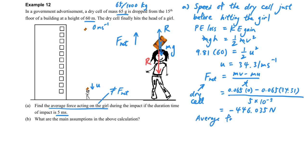But the girl is experiencing the normal reaction force. This is the difference. So in order to find the average force acting on the girl, we should use R minus mg equal to the F net.